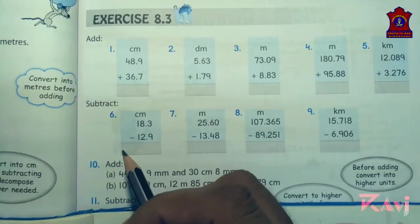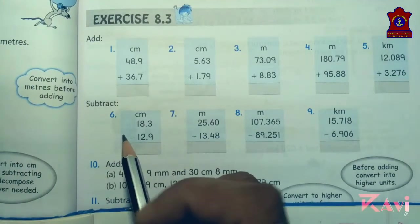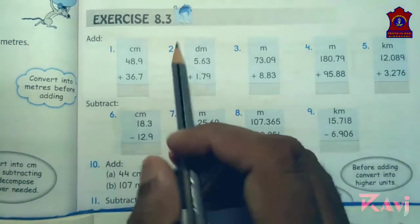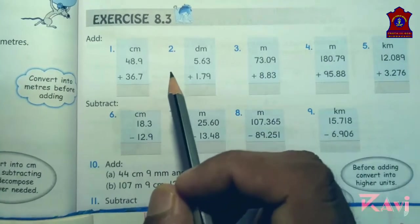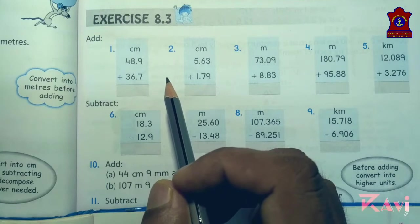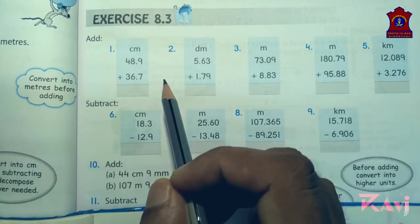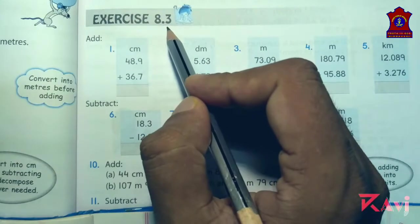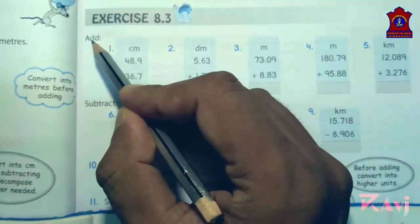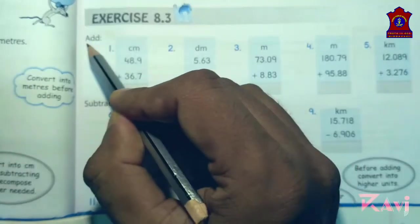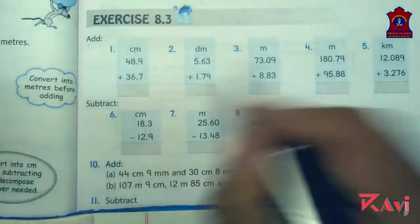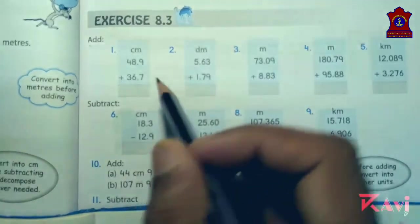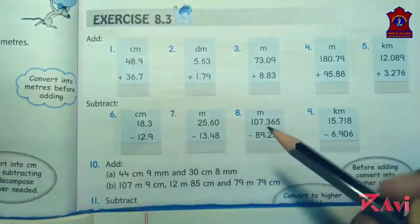Good morning students, today we will start Exercise 8.3 in which we will study four fundamental operations on length measures. Look at Exercise 8.3, here question number 1 to 9 you have to do in book only. It's simple addition and subtraction which you have already done in the decimal chapter.